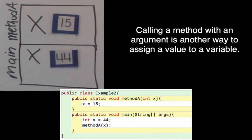So the big picture is that calling a method with an argument, like we did with x here, calling a method with an argument is another way to assign a value to a variable.